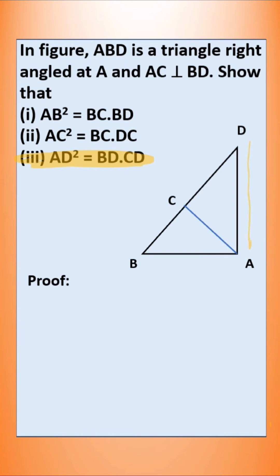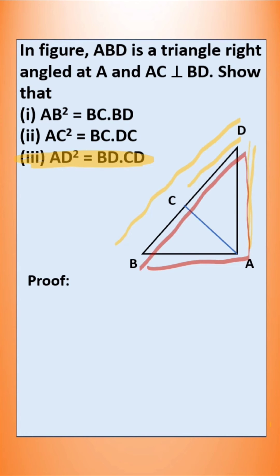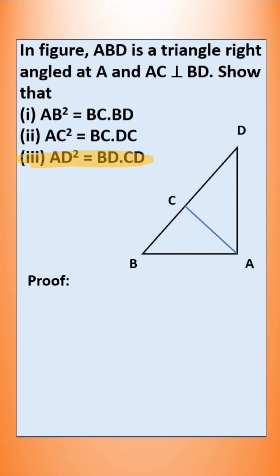Here, AD is this one. BD into CD — this is BD, this is CD. Now we have to concentrate on triangle BAD and triangle CAD. We know that angle D is common. This angle is 90 degrees and this is also 90 degrees. According to the angle-angle criterion, these two triangles are similar. So, triangle BAD is similar to triangle ACD, written with corresponding vertices in the same order.